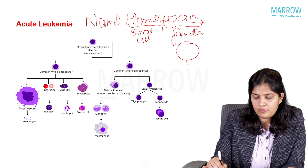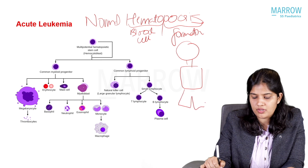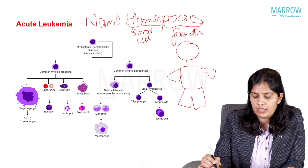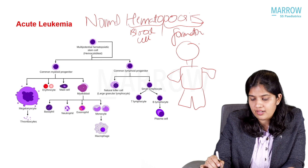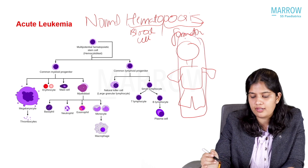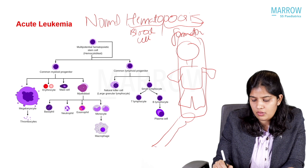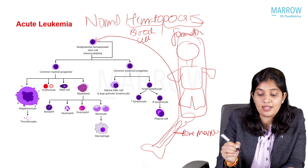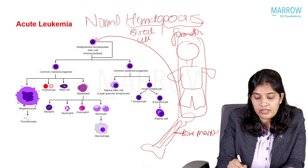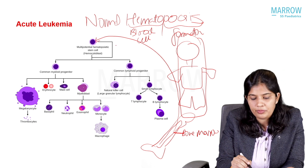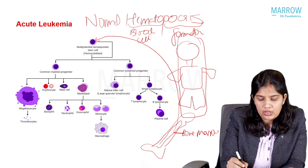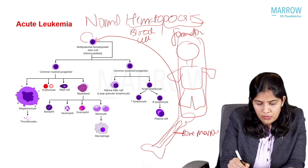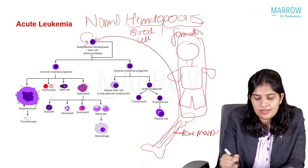As we all know, we have 206 bones in our body. After birth, hematopoiesis generally occurs in the axial skeleton. Inside the bone, we have the bone marrow, and in this bone marrow reside hematopoietic stem cells. These are multipotent hematopoietic stem cells with two characteristic properties: they can self-renew, and they can differentiate into other cells.